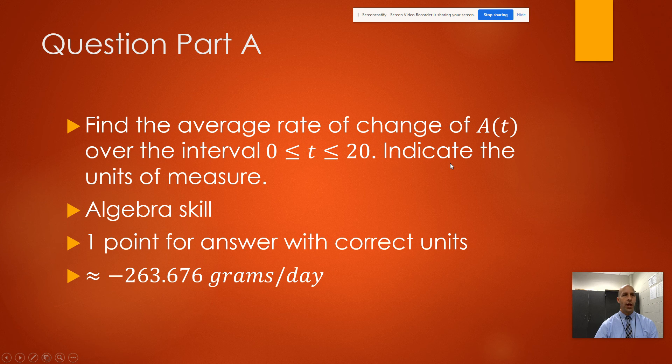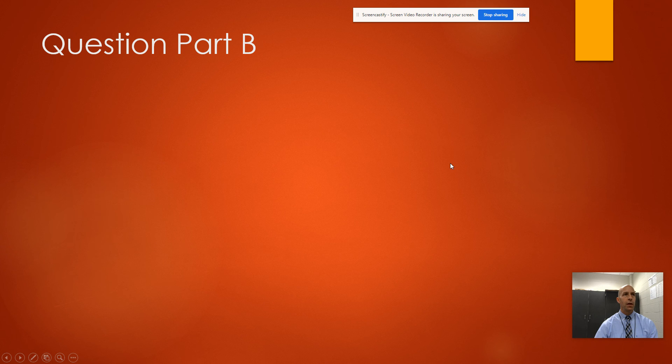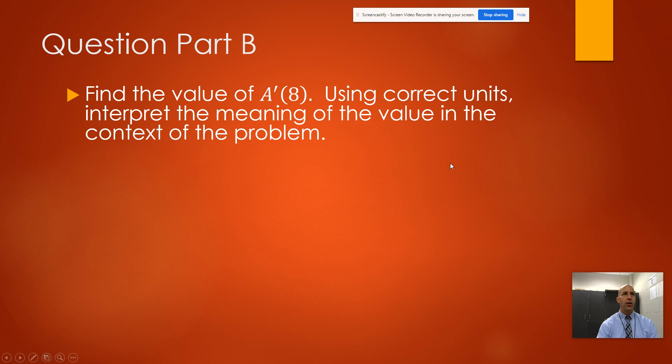Question B: Find the value of A'(8). Use correct units to interpret the meaning of the value in the context of this problem. A(t) is giving us the amount of decomposition that's occurring, and we're trying to find A'(8).